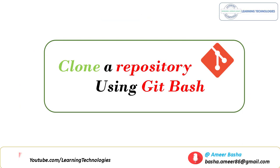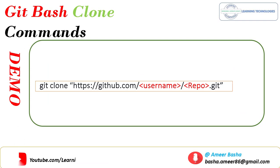In this session we will learn how to clone a repository using git bash. There is only a single command for that. You can see on my screen: git clone followed by the URL — https://github.com/username/repository-name — for whichever repository you want to clone using git bash.